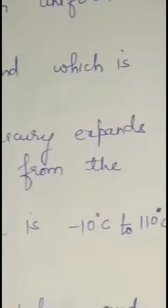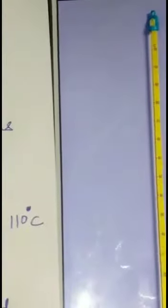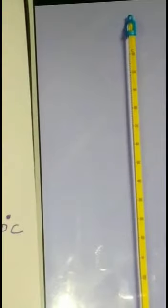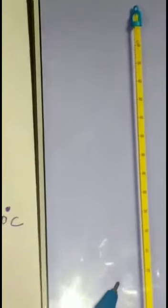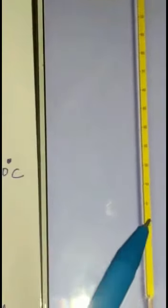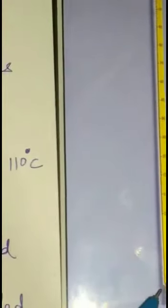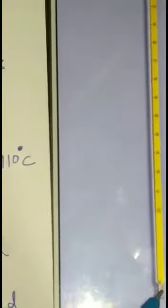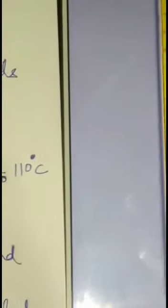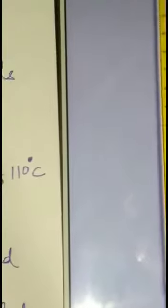I am showing you the picture of the laboratory thermometer. The instrument used to measure temperature is called a thermometer. As you are watching in this picture, it consists of a long, thin, uniform glass tube sealed at one end with a bulb filled with mercury — a shining thread of mercury that can be seen from outside.